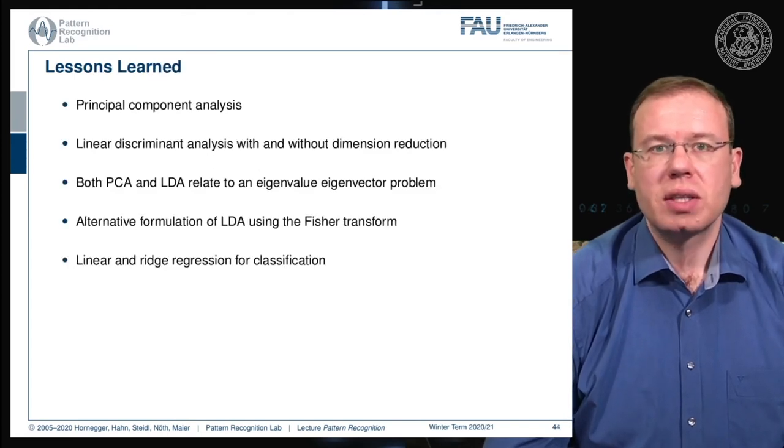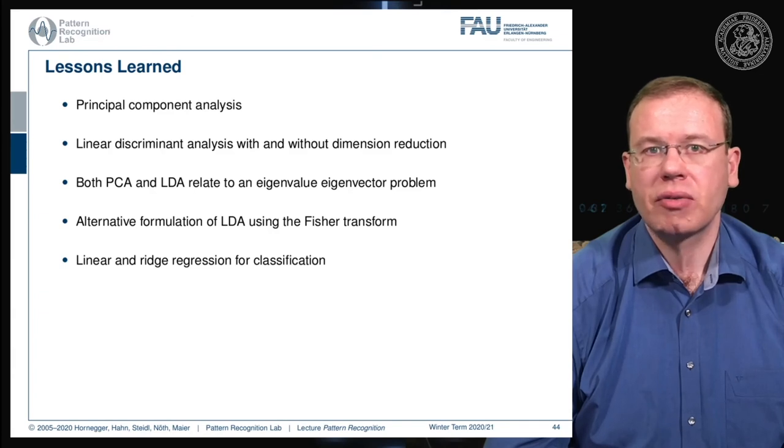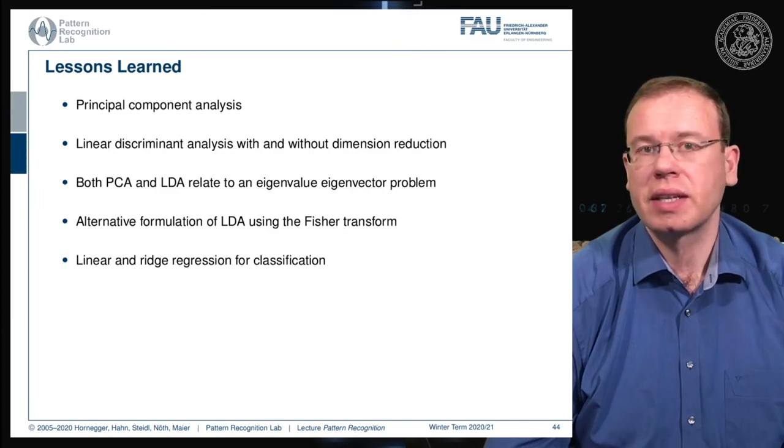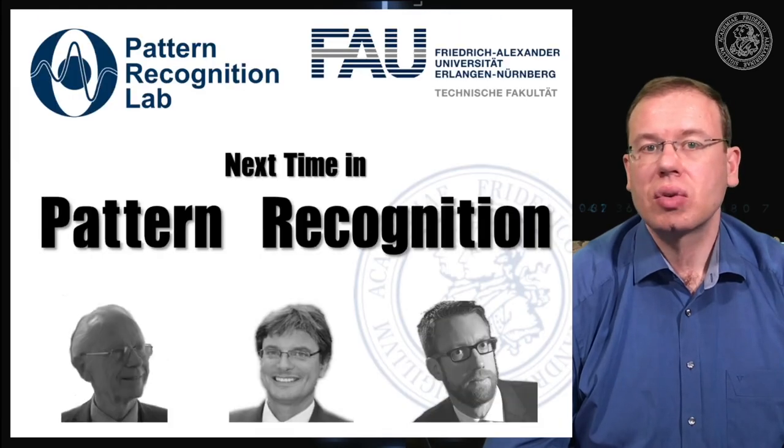So what did we learn? We learned about principal component analysis. We used linear discriminant analysis with and without dimensionality reduction. Both PCA and LDA are computed using eigenvector problems. You just have different matrices on which you apply them and a different form of normalization. For LDA, you will always need the class membership because otherwise you won't be able to compute any kinds of inter- and intraclass covariance matrices. We brought in two alternative formulations: the rank-reduced one and the Fischer transform, the classical approach. We looked into linear and ridge regression methods for classification, which brings us to the next lecture.